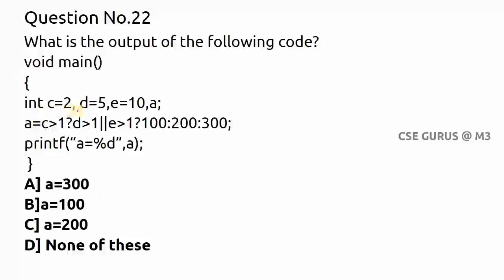Question number 22: what is the output of the following code? Here, c equals 2, d equals 5, e equals 10, and you need to find 'a'. There is a ternary conditional operator involved. In general, if you have i = (j > k) ? a : b — if the condition is true, a is assigned to i; if false, b is assigned to i.